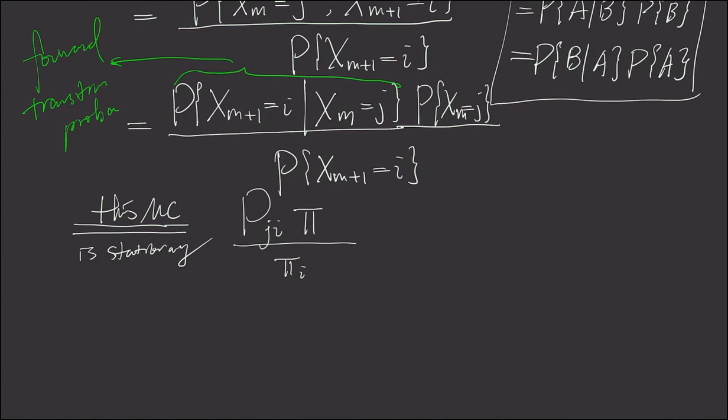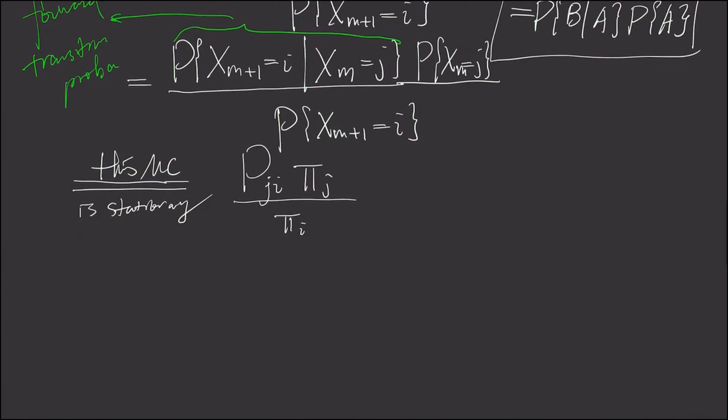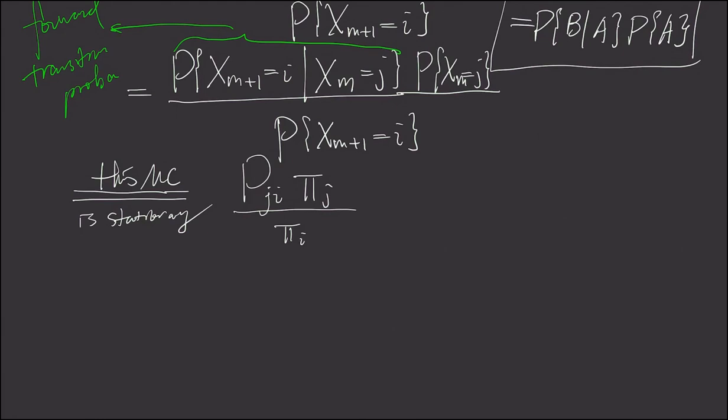This is because initially we have this at state j and then we transit to state i. And times now this is in state j, so this is π_j. And keep in mind π_i, π_j are just different values of the same distribution. What I want to say is this probability distribution has the same probability distribution with this one.